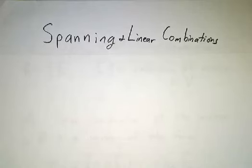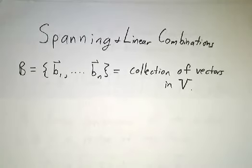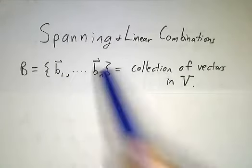In this video, we're going to talk about linear combinations and spanning in the context of an arbitrary vector space. So let's suppose we've got a vector space V, and we have a collection of vectors in that vector space: b1, b2, b3, ... bn.